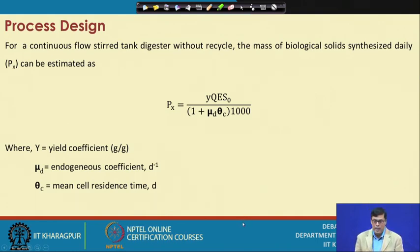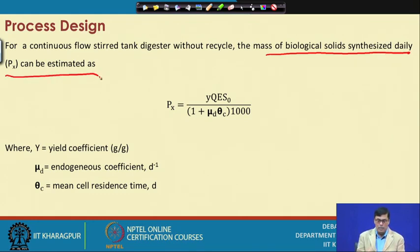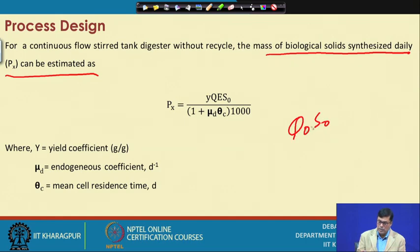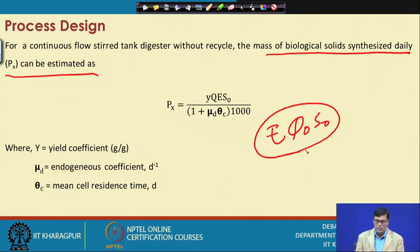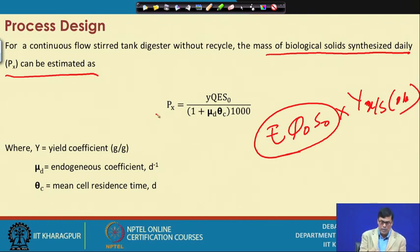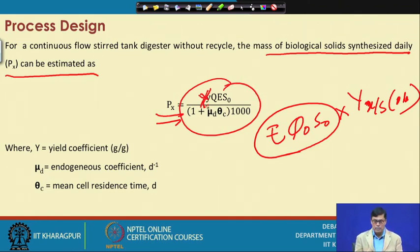Another important parameter in process design is the mass of biological solids synthesized daily—the rate of cell mass formation. This can be calculated as Q·S₀ multiplied by the substrate conversion factor E, giving the actual amount of substrate converted. Multiplying by Y_obs (the observed yield coefficient, Y_x/s) gives the exact amount of cell mass produced. Here, Y stands for the yield coefficient.